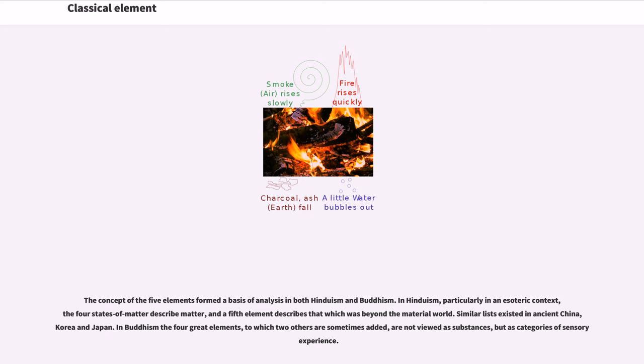Similar lists existed in ancient China, Korea, and Japan. In Buddhism the four great elements, to which two others are sometimes added, are not viewed as substances, but as categories of sensory experience.